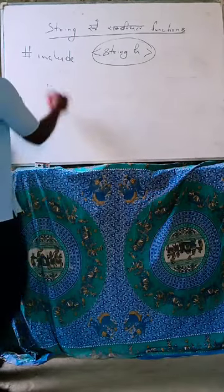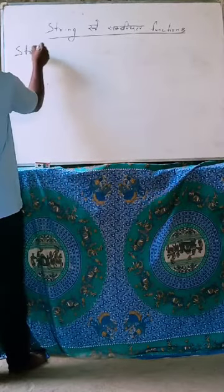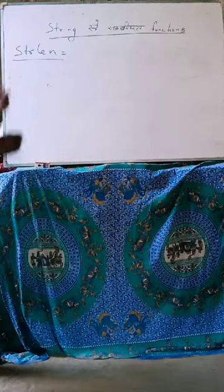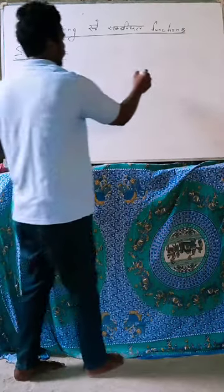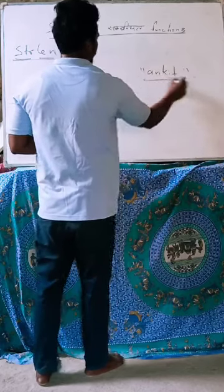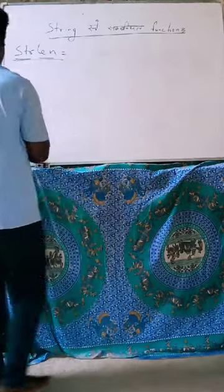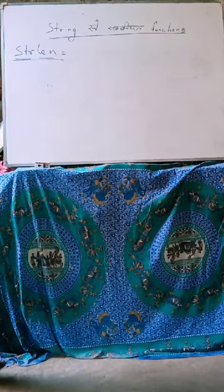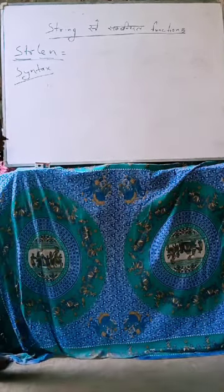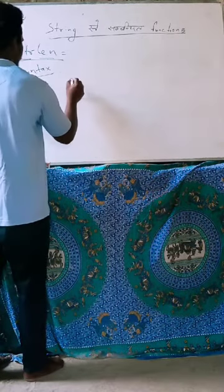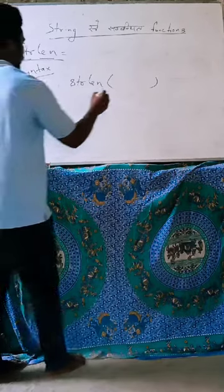The first function is strlen, which stands for string length - str means string, len means length. We use this function to find the length of a string. The strlen function is defined in the string.h library file. Its syntax: we use this function to get the length of a string.